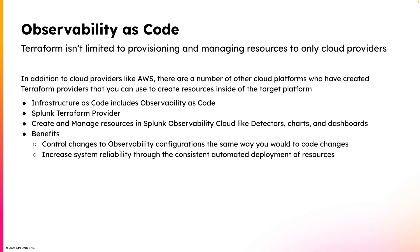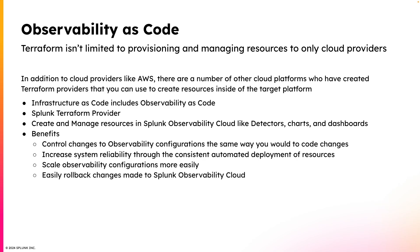So when you use Terraform to manage resources in Splunk Observability Cloud, you're increasing your system's reliability. Not only that, you're able to scale your observability configurations more easily. And when a change is made that breaks things, you can easily roll back those changes. Terraform also has modules, which is essentially reusable Terraform configuration. You can share these modules with your development teams so that when they are defining observability resources in Splunk Observability Cloud, you can ensure that they are all implementing them in the same way.